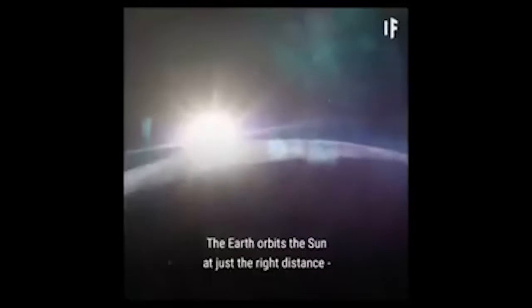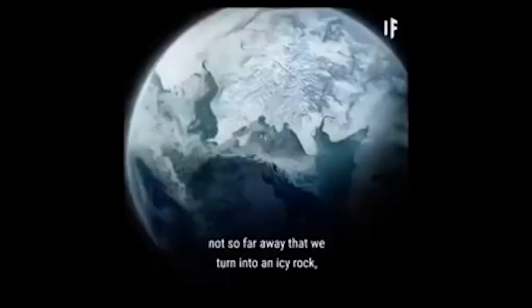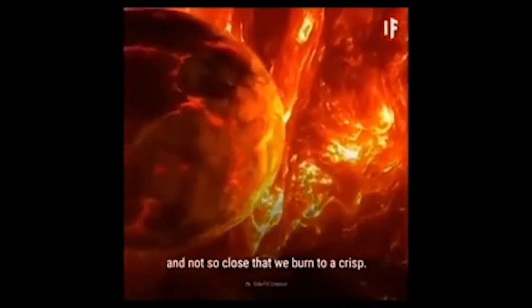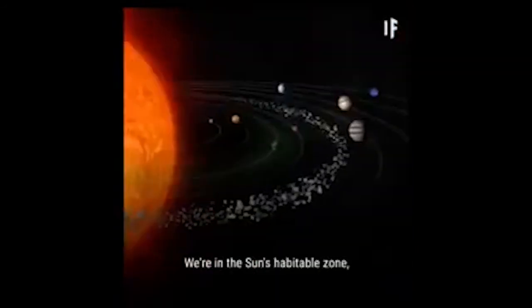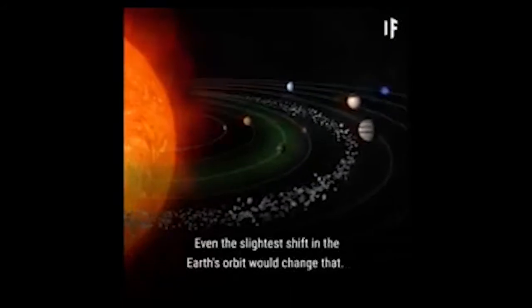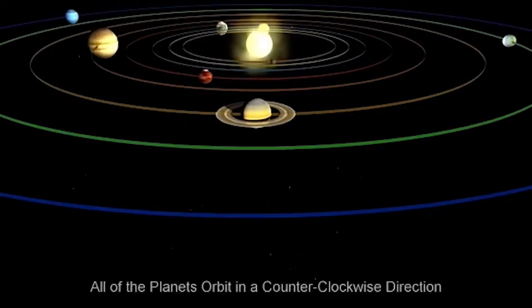Earth orbits the sun at just the right distance. Not so far away that we turn into an icy rock, and not so close that we burn to a crisp. We are in the sun's habitable zone, where water can exist in liquid form. Even the slightest shift in the earth's orbit would change that.